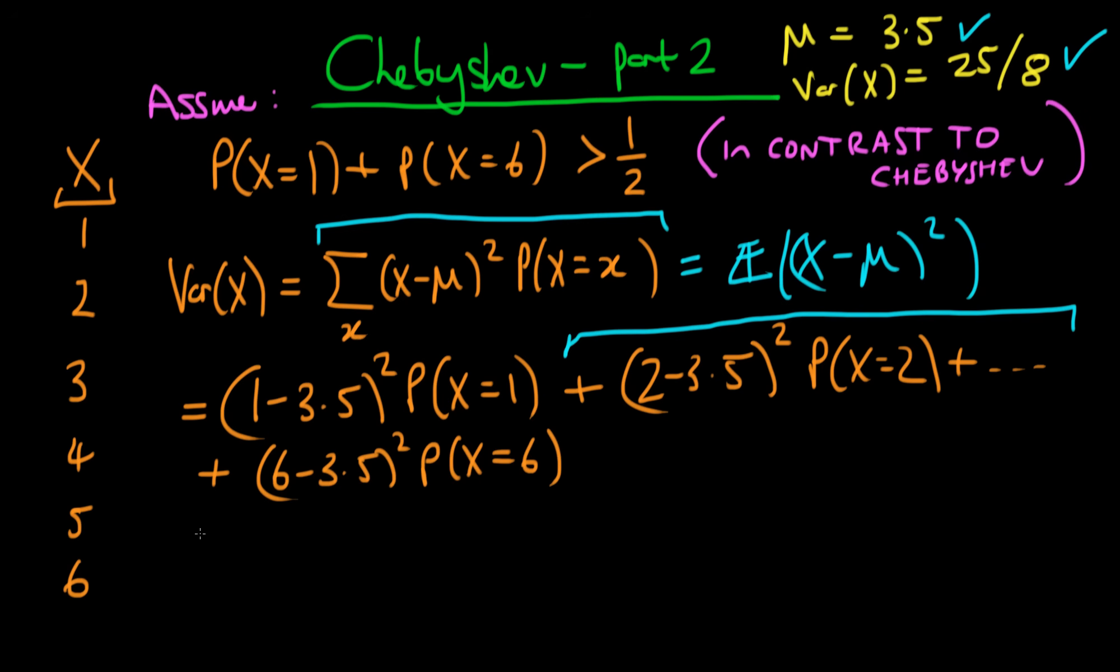So that means that we can write the variance of x as being greater than or equal to 1 minus 3.5 squared, namely 2.5 squared, times the probability that x equals 1 plus 2.5 squared again times the probability that x equals 6.